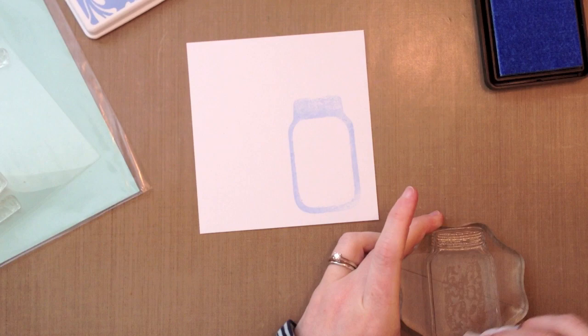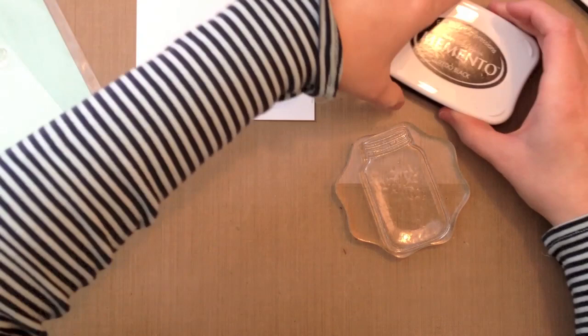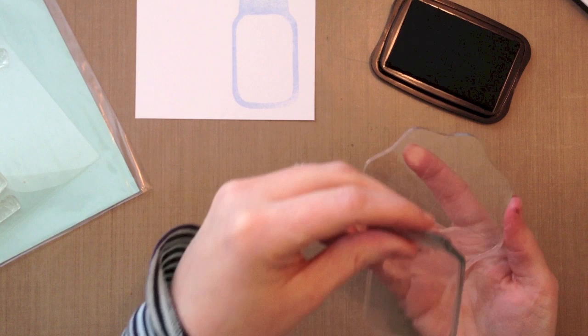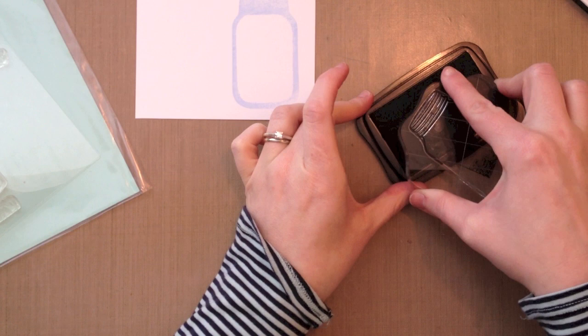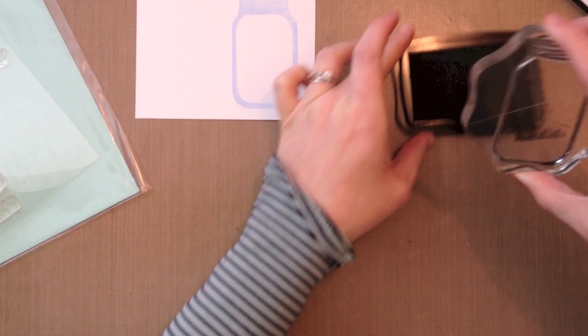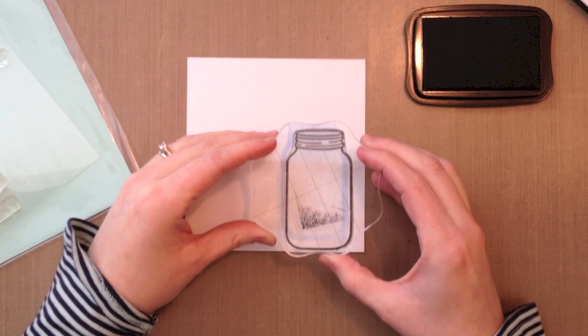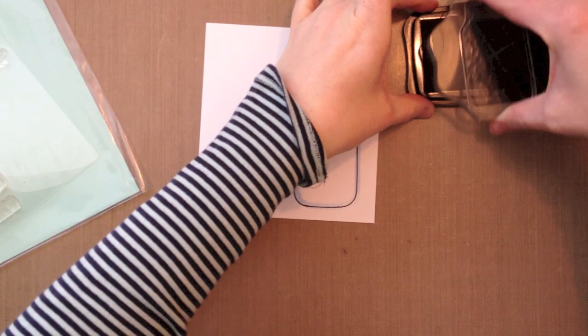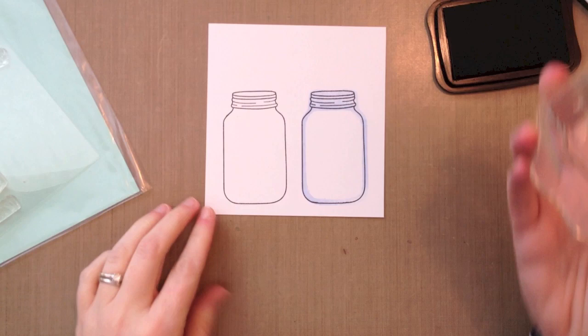So now what you can do is clean off the back of your stamp first and then flip it over. We're going to stamp it like we would normally stamp it. So I'm going to flip it over here so that the image is the right side up. And I'm just going to ink it up with some Memento Tuxedo Black ink. And then you can line it up with that blue that you just stamped and stamp it right on top.